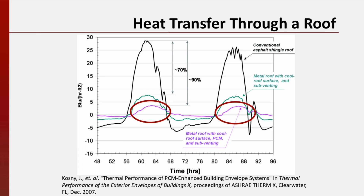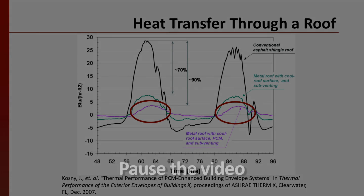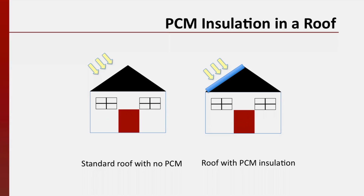How does phase change insulation help save energy? Pause the video here, take a moment to think about it, and share your thoughts with a classmate. Consider two homes with and without phase change materials in the roof insulation. Both homes are exposed to the same amount of solar energy from the sun. A significant portion of that energy is transferred through the roof into the house without phase change insulation. The house with phase change insulation reduces this amount because some of the energy that would otherwise enter the house is used to melt the phase change material in the roof. In order for this effect to occur each day, the phase change material must solidify every night before it can melt again the next day.